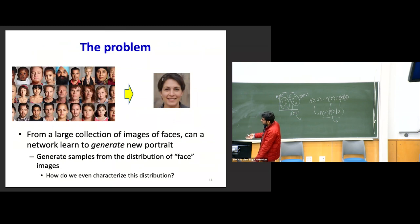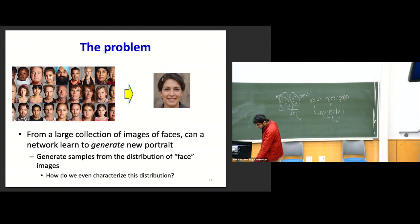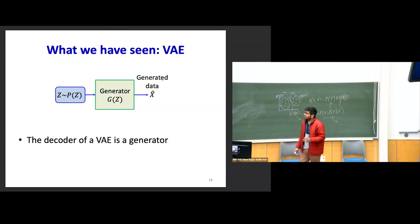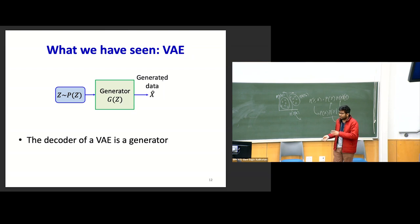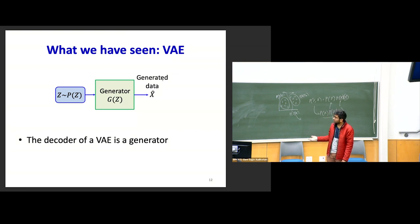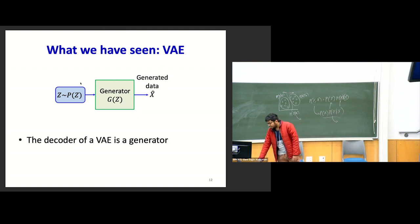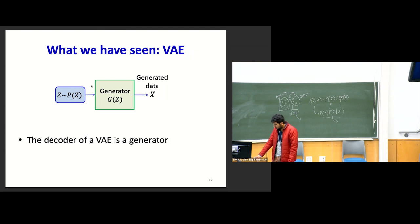The problem we're trying to solve is to learn a distribution and generate new data from it. We have seen the generative model called VAE — you take a VAE, train it end-to-end, throw away the encoder, and the decoder by itself is a generator. If you give a random latent vector Z sampled from a distribution P(Z) — most probably a Gaussian — and pass it through the generator, the generator produces synthetic data.